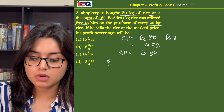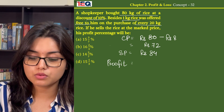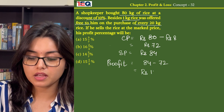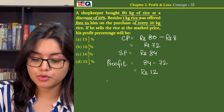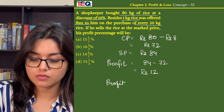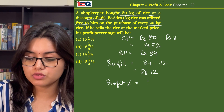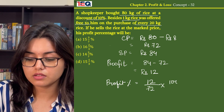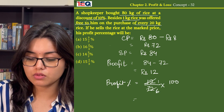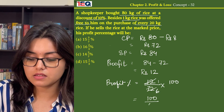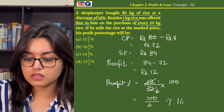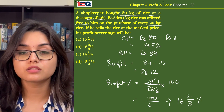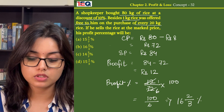Now profit amount is equal to 84 minus 72, that is Rs 12. And then the profit percentage is equal to 12 by 72 into 100. On dividing we get 6, so 100 by 6 we get 16 and 2/3 percentage. So the answer to this question is option B.